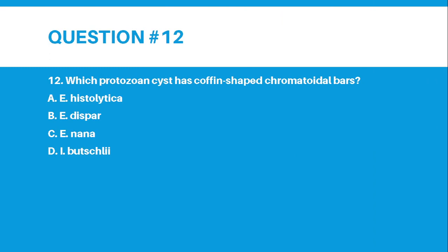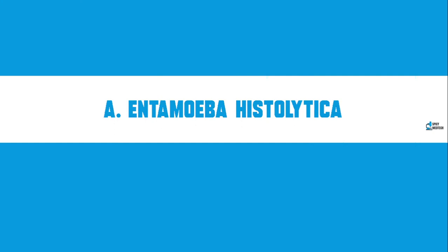Number 12. Which protozoan cyst has coffin-shaped chromatoidal bars? And the correct answer for number 12 is letter A, Entamoeba histolytica.